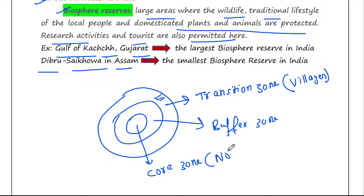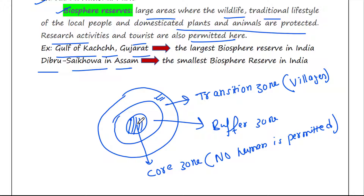The innermost zone is the core zone, where no human activity is permitted. The core zone preserves wildlife — for example, tigers are protected here and it is completely free from human activity. So the biosphere reserve as a whole is a huge area, which is the key difference between a biosphere reserve, a wildlife sanctuary, and a national park.